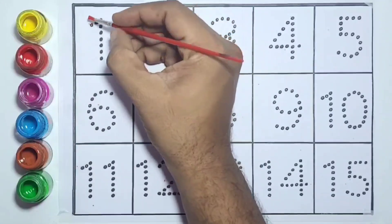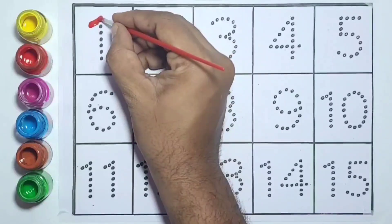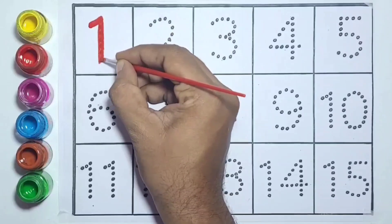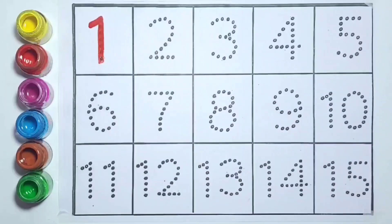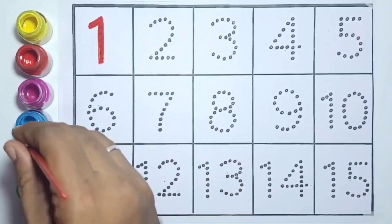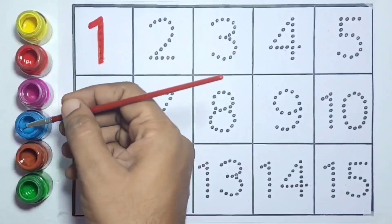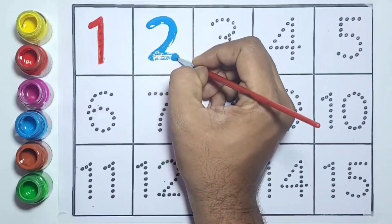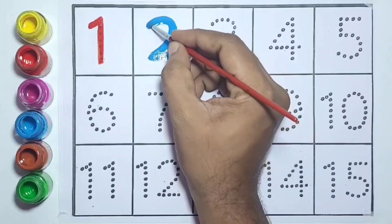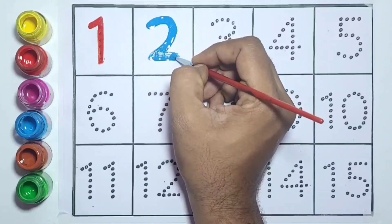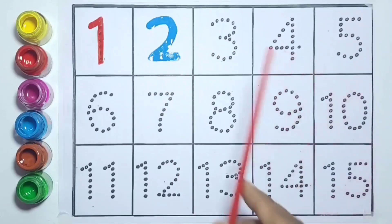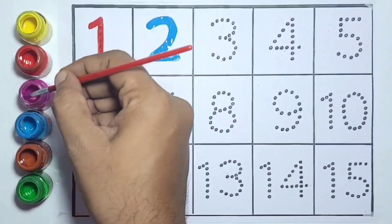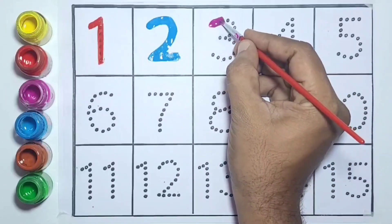What is this, kids? Number one — O-N-E, one. Number 1 will be colored with red color. Number two — sky blue color. This is number 2, and it gets sky blue color.